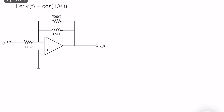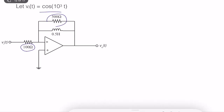What is the impedance of a resistor? It is the resistor value, so it is equal to 100. What about the impedance of the inductor? ZL of j omega is equal to L times j omega.